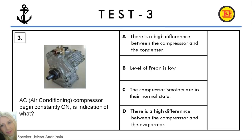Question number 3. An air conditioning compressor running constantly is an indication of what? A: There is a high difference between the compressor and the condenser, B: Level of freon is low, C: The compressor's motors are in their normal state, D: There is a high difference between the compressor and the evaporator. And the correct answer is B: Level of freon is low.